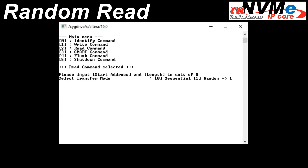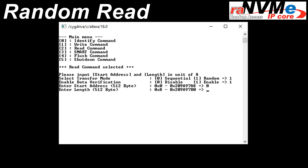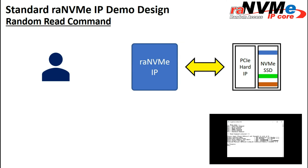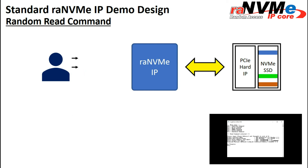To run the demo with random read mode, the user sets the transfer mode to random, then chooses to enable or disable data verification, and inputs the start address, data length, and also the data pattern when verification is enabled. For the user interface of RANVMe IP, the command and start address are sent to the IP to read the first 4KB data, then the data is read from the SSD. The process is then repeated with any other 4KB aligned address calculated by firmware until all received data is completed.